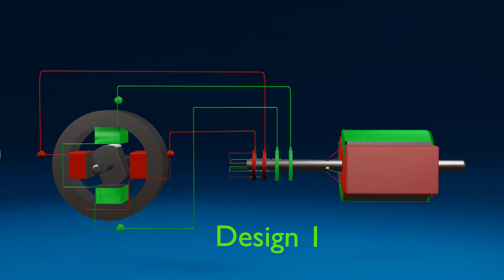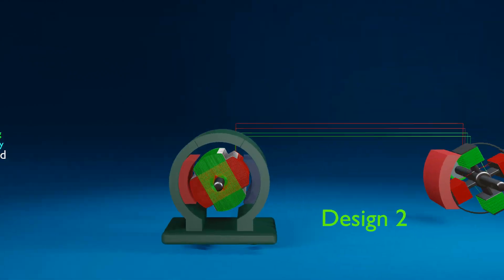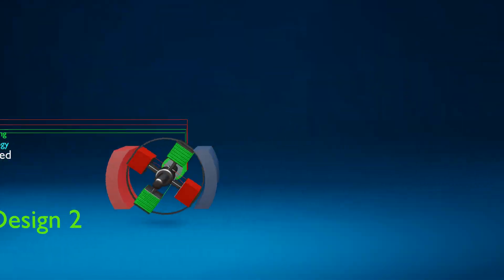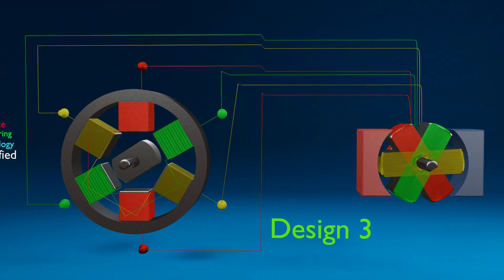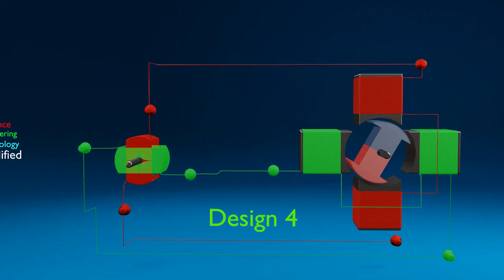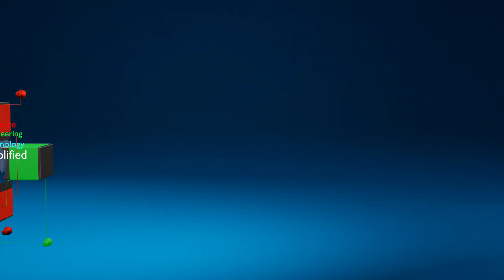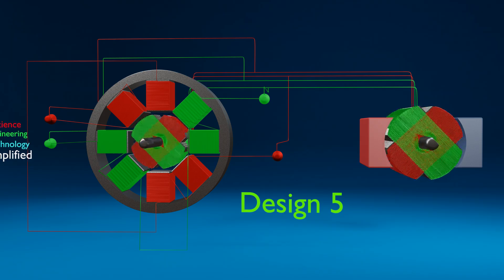Nikola Tesla invented certain new and useful improvements in the electromagnetic motor. This invention can also be used for the transmission of power in an efficient way. So let us have a look at this invention.